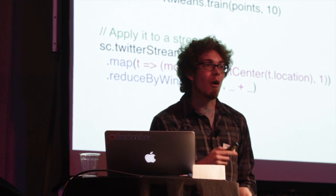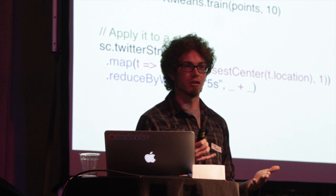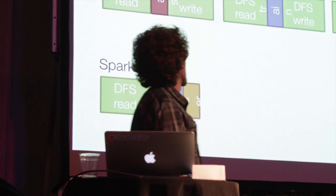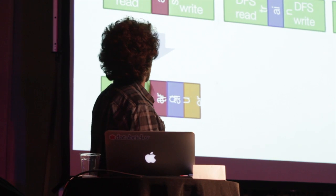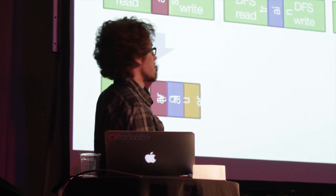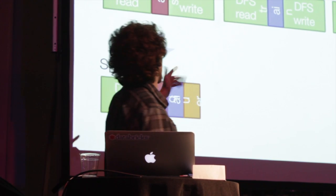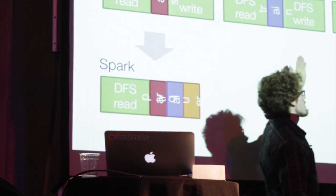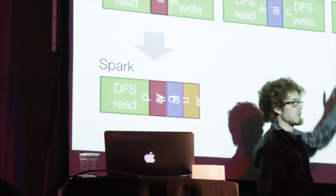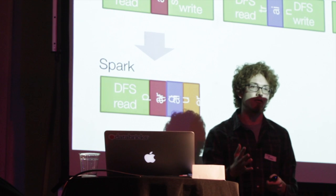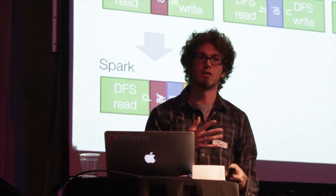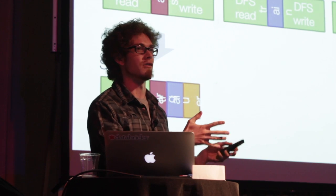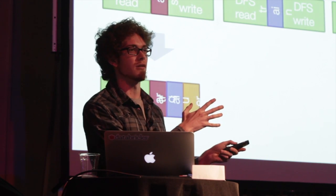The neat part about this unification is that in addition to being easier to program, it can give you big efficiency benefits. Imagine having three separate systems for feature extraction, machine learning, and predictions — in addition to being operationally difficult to keep three separate systems running, it can be expensive because you have to ship data out of one system into another.